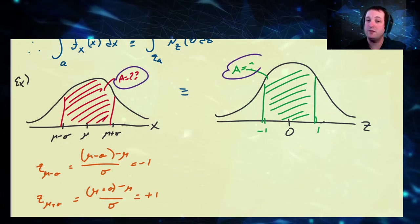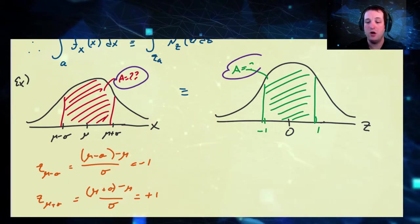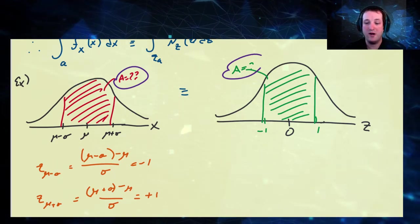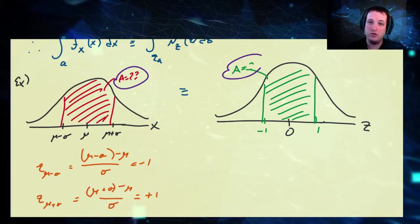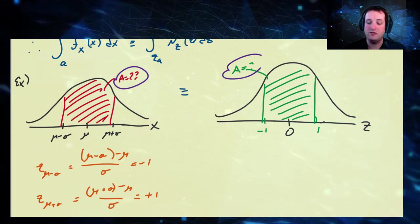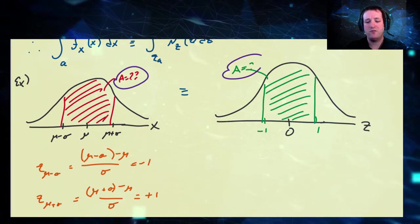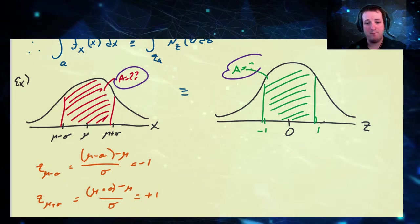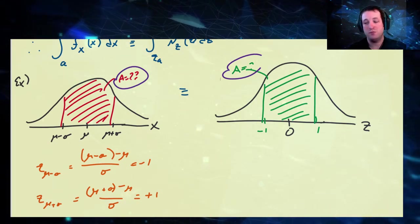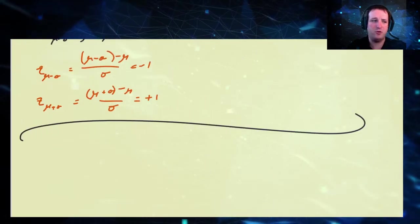Since the standard normal and the normal distribution are non-elementary functions, in general we cannot calculate exact values, so all these integrals will be calculated via software — MATLAB, Desmos, or whatever. Back in the day they used tables. Now we're going to try and go backwards. If I give you some bounds a and b, you can find the area between them. But what if I tell you the area between two points — what are those bounds? This is what we call an inverse problem.